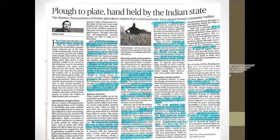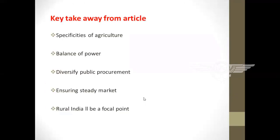The next article explains the impact of agriculture, its balance of power, diversifying public procurement, and ensuring a steady market. After the 1991 economic liberalization, the importance of agriculture has been reducing day by day. The uncertainty of weather, soil fertility, and water availability makes increasing returns to scale very difficult to achieve in farming. Production in agriculture cannot be organized like an assembly line as in industrial processes.